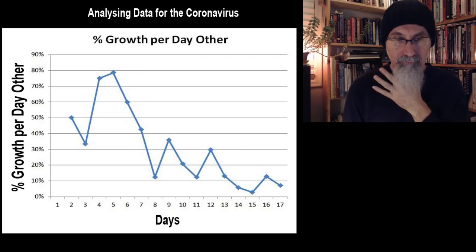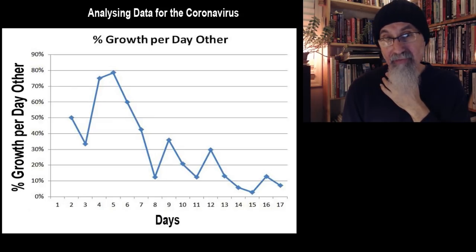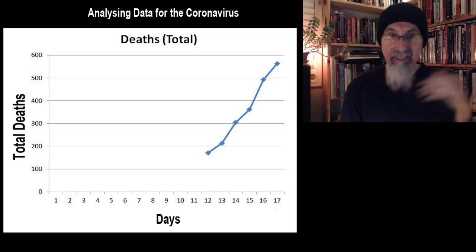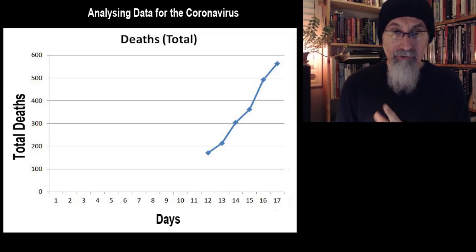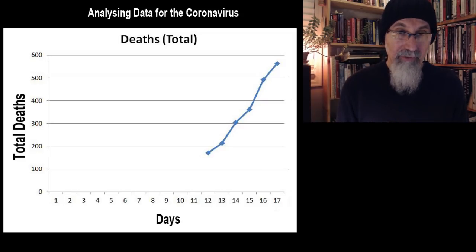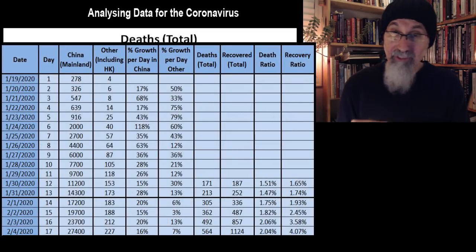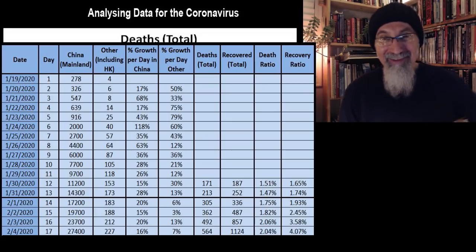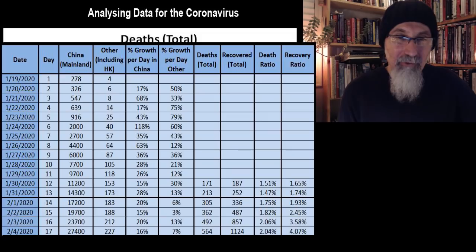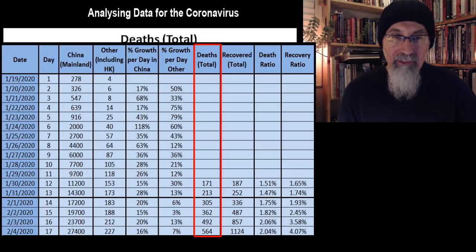Here is what the graph looks like for the death toll so far — total death toll inside and outside of China. Outside of China, there isn't that many. Within one to six days, the death toll has gone from 200-plus people to 500-plus people — that's doubling. So the death toll so far is doubling every six days. Looking at the table, column seven, within five days the death toll has more than doubled.